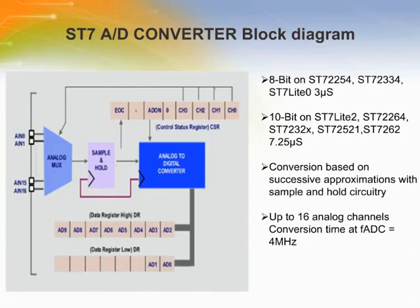There are 8-bit and 10-bit resolution analog to digital converters in the ST7 family. The input range is positive — negative voltages are not converted. The ADC is fed with the core clock frequency. The analog multiplexer is driven by channels 3 through 0 of the analog to digital control and status registers, selecting which analog input to convert. The analog signal is sent to the sample and hold circuit, and at the end of conversion the EOC bit is set and the result placed in the data registers. Conversion time for a typical ST7 8-bit ADC running at 4 MHz is 3 microseconds; for 10 bits it is 7.25 microseconds.